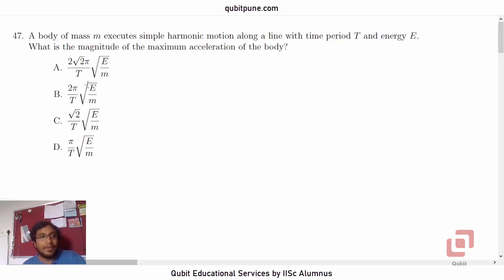47th question. A body of mass m executes simple harmonic motion along a line with time period T and energy E. What is the magnitude of the maximum acceleration of the body? And we have four options.